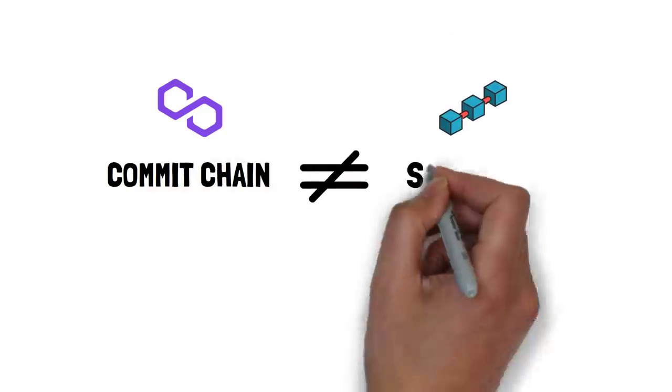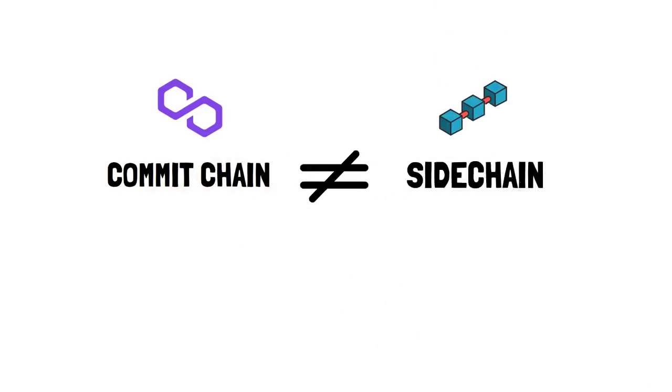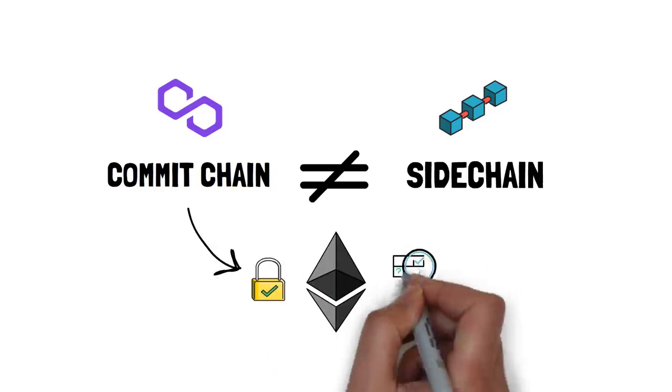When it comes to Polygon commit chain, it is worth differentiating it from a sidechain as it has a lot of extra features that rely on the security of the main Ethereum layer. Let's review them one by one.